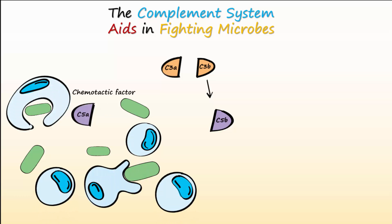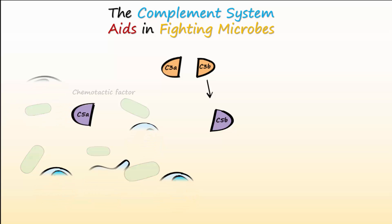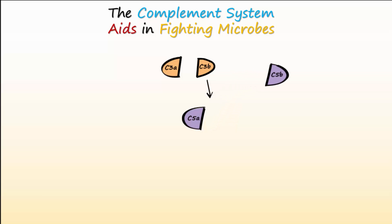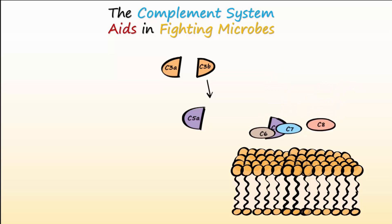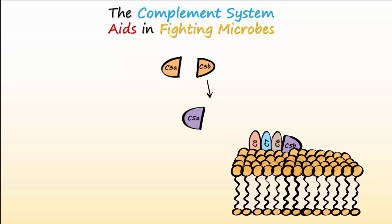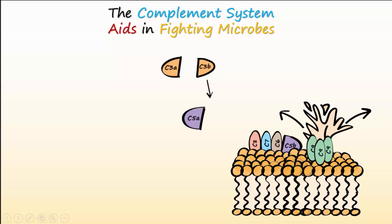C5B starts the activation of several complement proteins involved in bacterial cell lysis. Complement proteins C5B, C6, C7, and C8 bind together sequentially and insert themselves into the bacteria's plasma membrane to form a receptor for C9. Many more C9 molecules then bind to this receptor to form a channel that allows extracellular fluid to enter the bacteria and cause it to lyse. The complement proteins C5B through C9 collectively form what's called the membrane attack complex, or MAC.